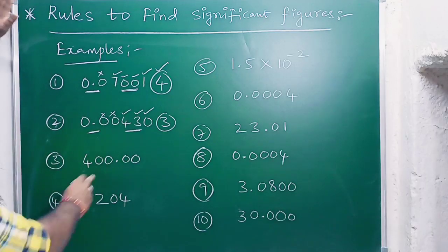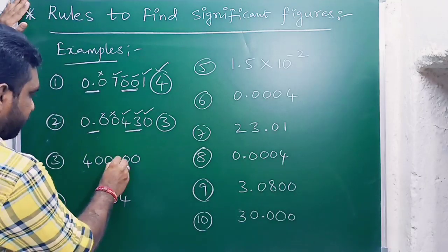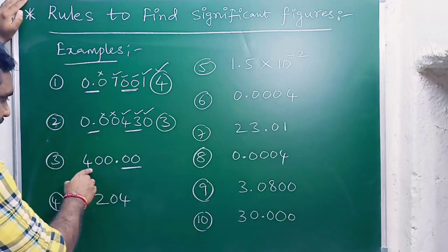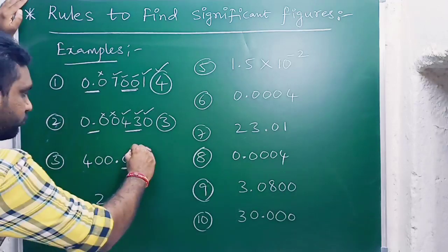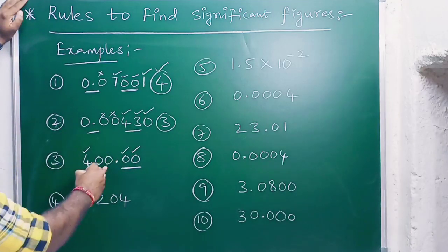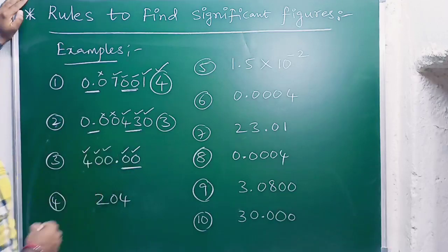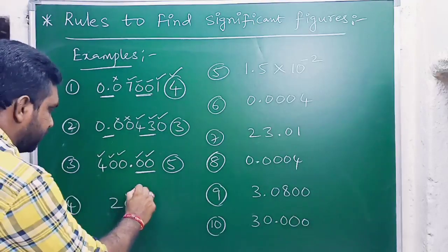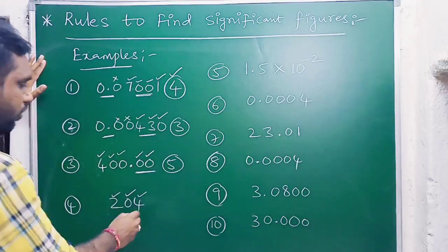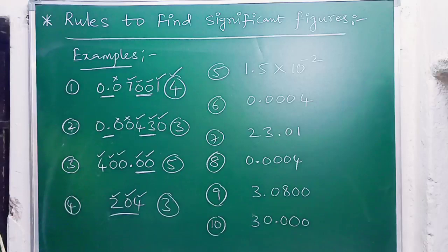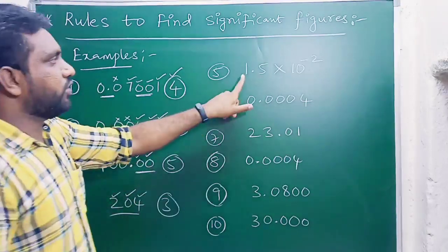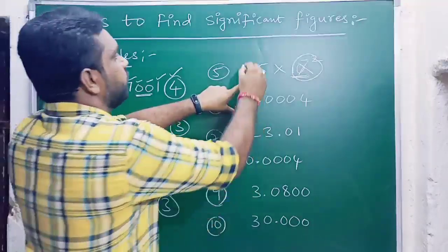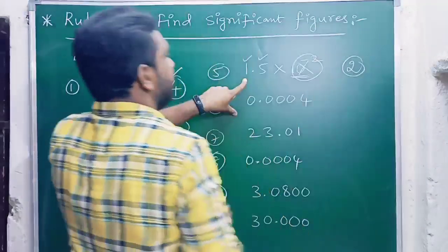In the next example, a decimal point is present; there are two trapped zeros which are significant, and the other digits are also significant. Overall there are five significant figures. In example four, all non-zero digits are significant — three significant figures. For the example with 10-power notation, 10 to the power is not significant, and only two non-zero digits remain, so there are two significant figures.